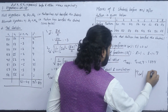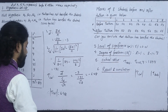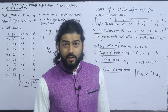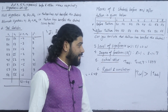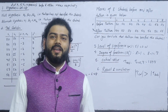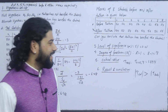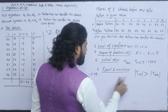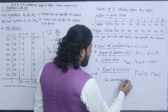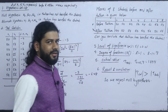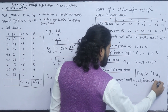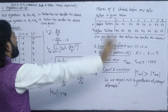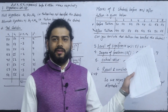Result and conclusion: T calculated = 6.5, tabulated = 1.89. Since calculated is greater than tabulated, we reject the null hypothesis and accept the alternate hypothesis. Tuition has benefited the student.